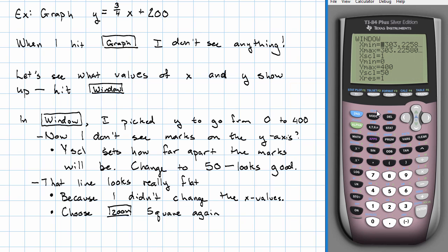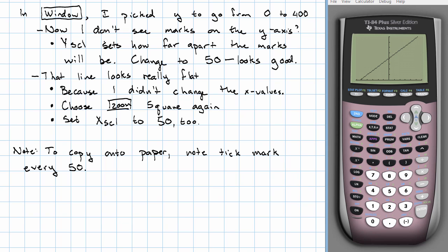Notice, zoom square only increases the minimums and maximums to make things fit. So, if you choose zoom square, all of the points you used to be able to see, you'll still be able to see. But now, I've got that solid line on my x-axis. I don't like that. I'm going to set x scale to 50 also. Now, that's a nice looking graph for this equation. That's a nice looking graph for y equals 3 fourths x plus 200. If I wanted to copy that graph onto a piece of paper, I would note that there was a tick mark every 50. So, when I was marking my axes on the paper, I would make sure to label all of my tick marks counting by 50s. And then, I would use my y-intercept and my x-intercept in order to copy the graph.